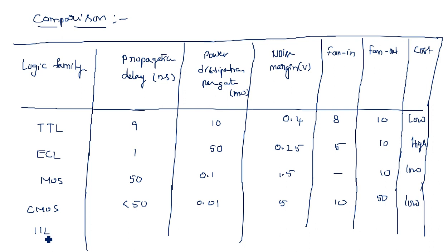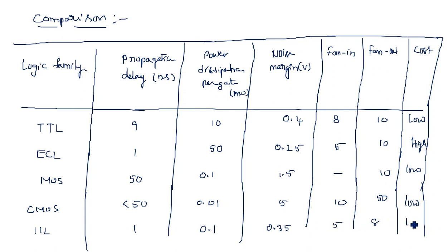The last logic family is IIL — Integrated Injection Logic. Propagation delay is 1 nanosecond, power dissipation is 0.1 milliwatts, noise margin is 0.35 volts, fan-in is 5, fan-out is 8, and cost is very low.